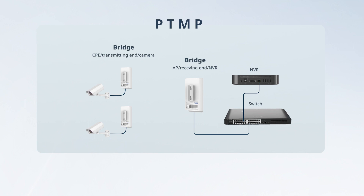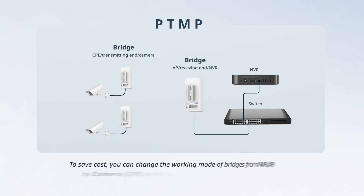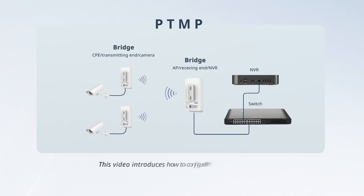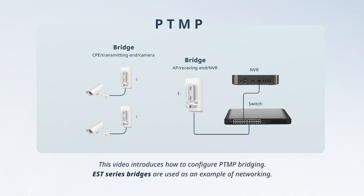Bridging is only supported between the same models. To save cost, you can change the working mode of bridges from NVR AP to Camera CPE, so that one NVR bridge can connect to multiple camera bridges. This video introduces how to configure PTMP bridging. EST-series bridges are used as an example of networking.